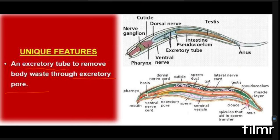Aschelminthes have some unique features — special excretory tubes are present to remove body waste through the excretory pore. Although the respiratory and circulatory systems are absent, these special excretory tubes help in removing excretory waste through the excretory pore. This is actually a very unique feature of Aschelminthes.